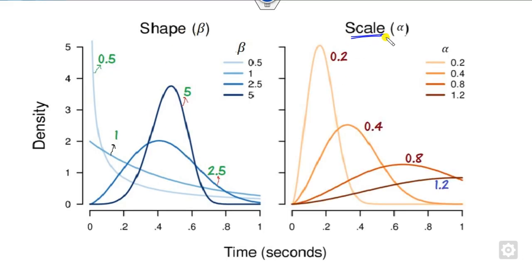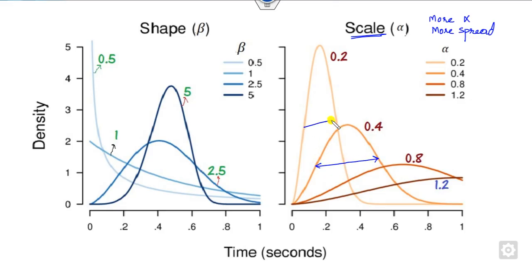On the other hand, the scale parameter alpha defines the spread. You can see that for alpha equal to 0.4, the spread is larger than for alpha equal to 0.2. For alpha equal to 0.8 and 1.2, the spread increases further. So, the larger the value of the scale parameter, the greater the spread. This is the variation of parameters alpha and beta.